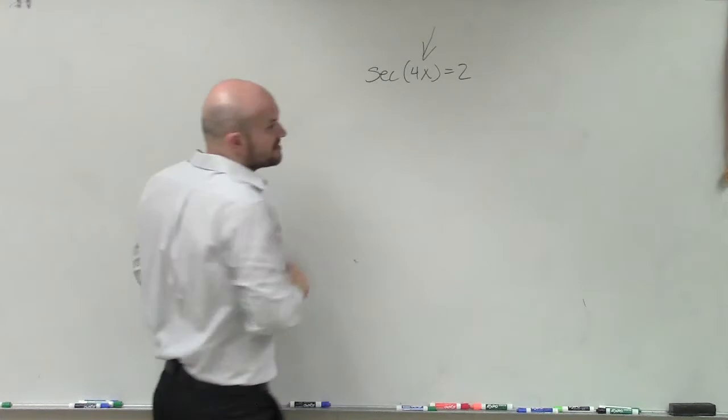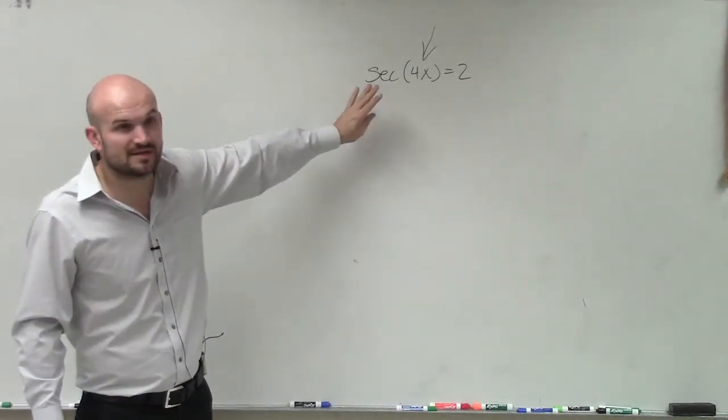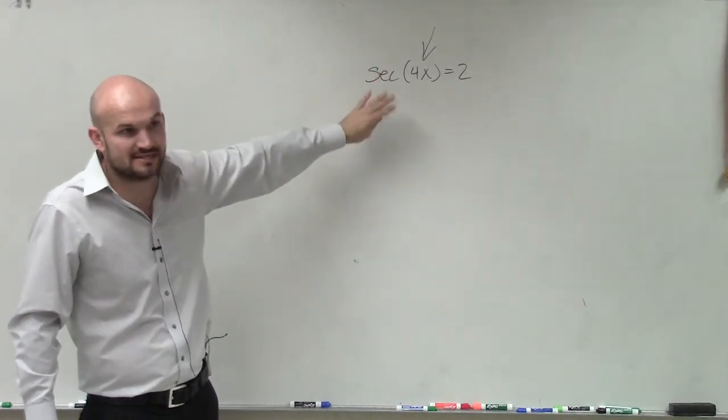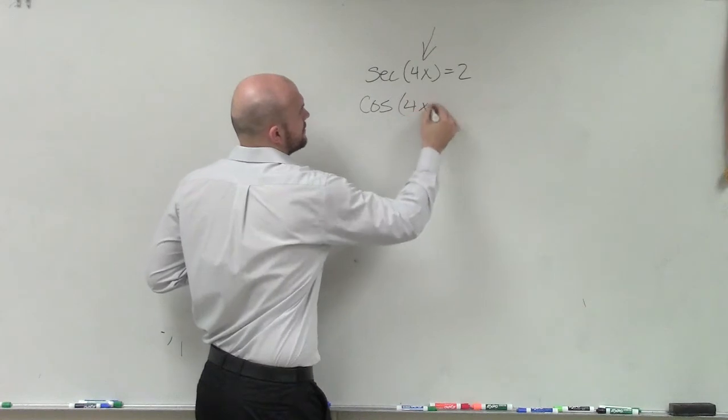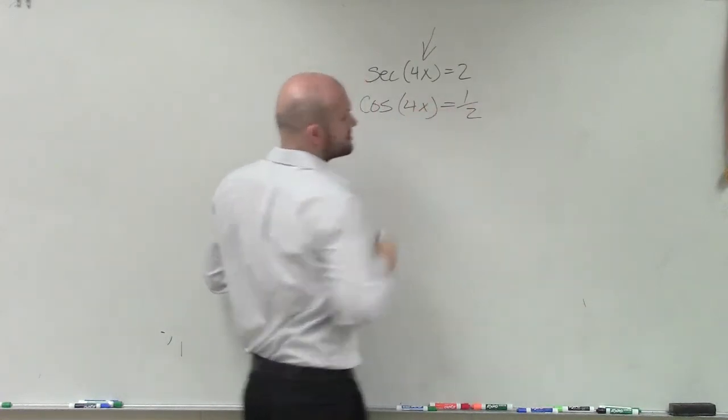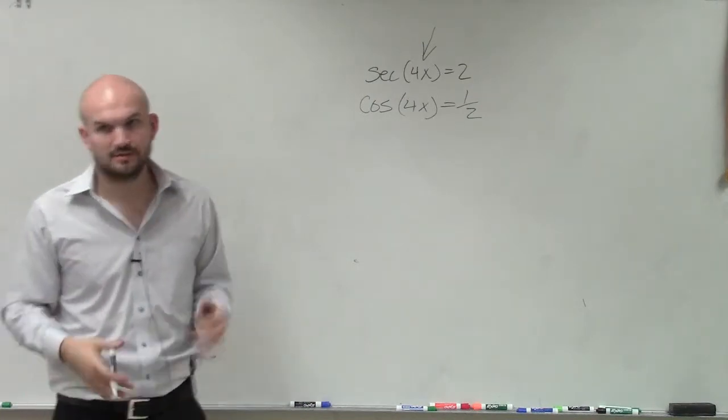So anyways, to solve this, we need to determine when is secant equal to 2. I don't really like solving for secant because I'm not used to it. I like solving for sine, cosine, and tangent. So by applying my reciprocal property, I can rewrite this as cosine of 4x equals 1 half. Reciprocals of each other, much easier.